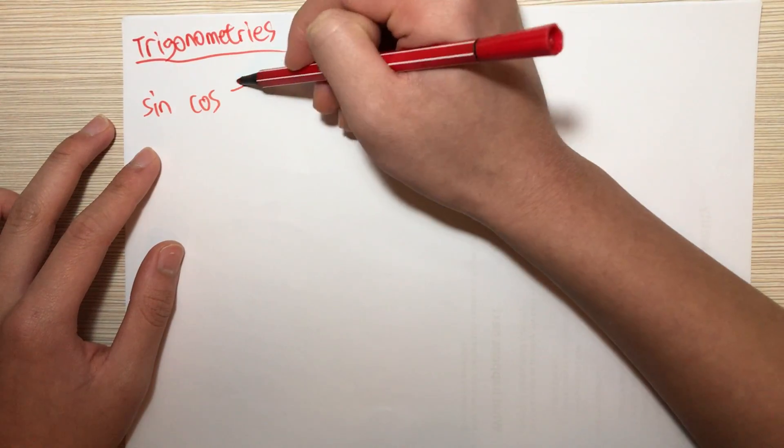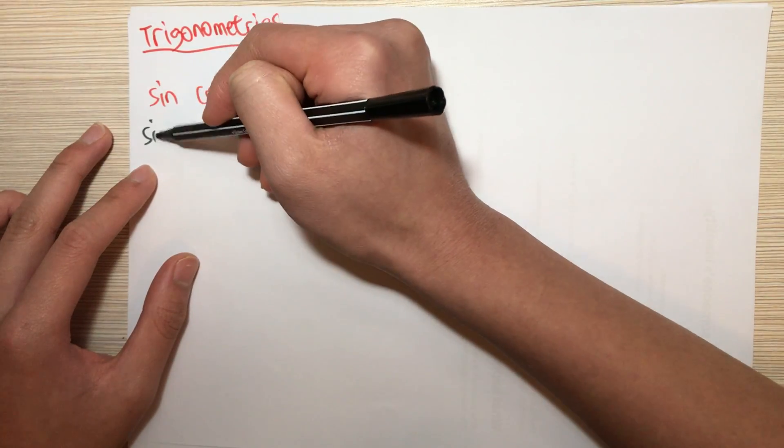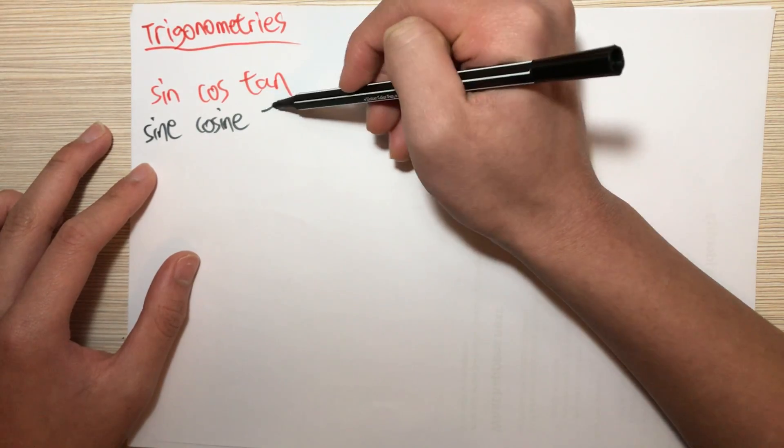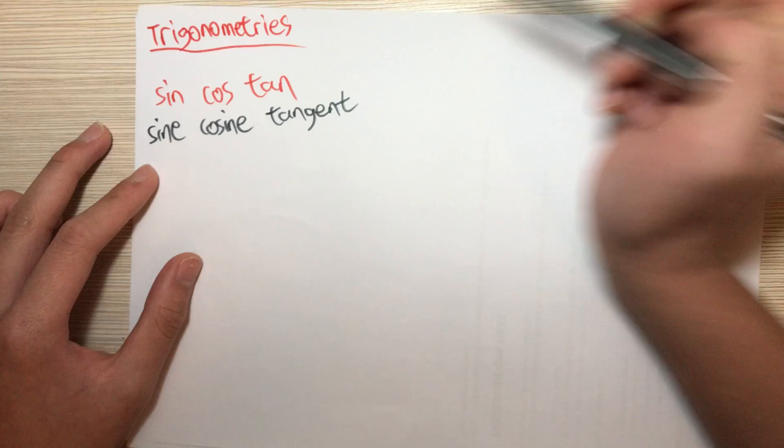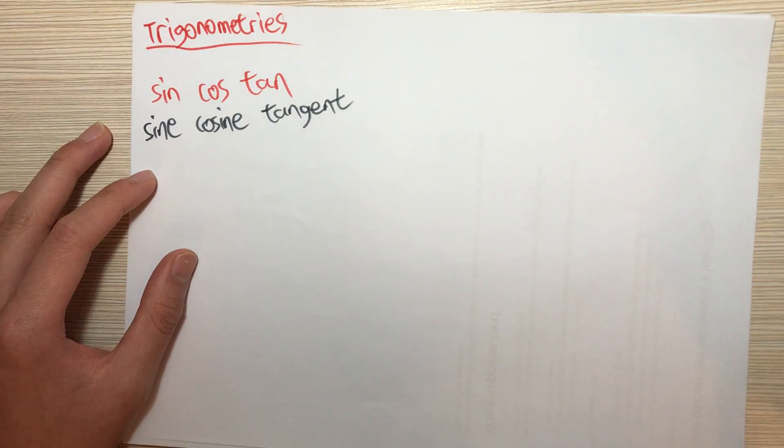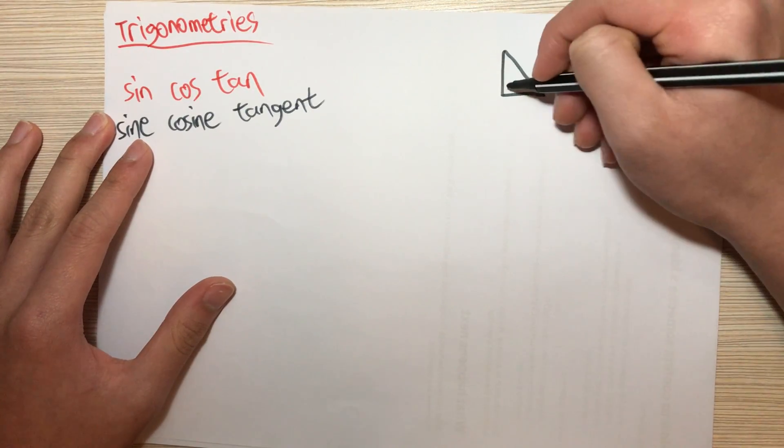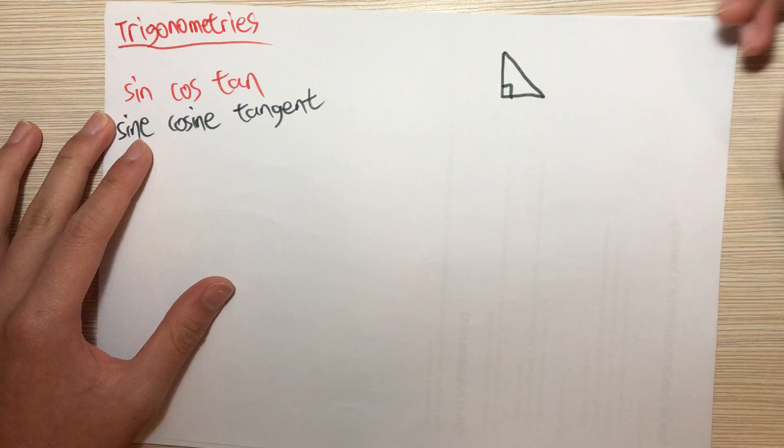Now let me write down their full names first. It is sine, cosine, and tangent. I will only talk about the basic concept of it. Consider we have a right angle triangle.